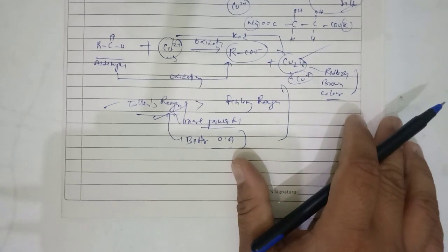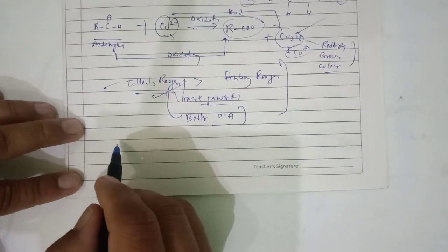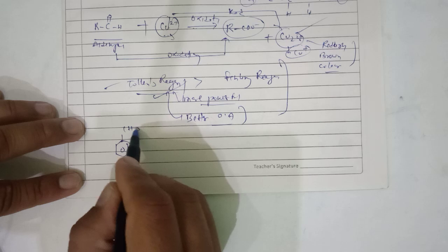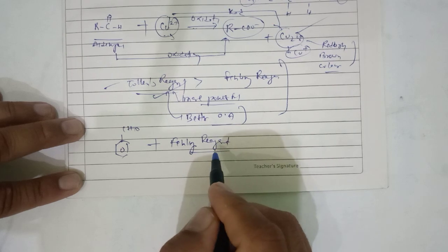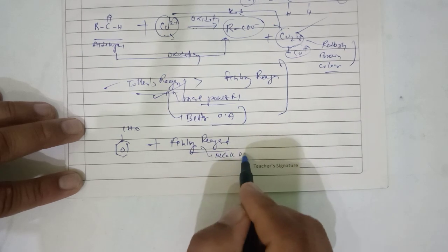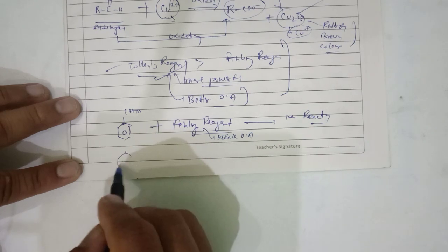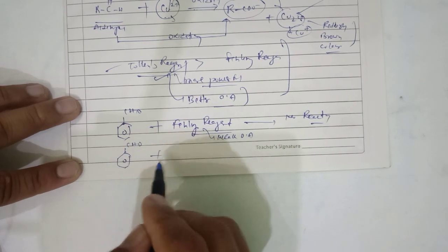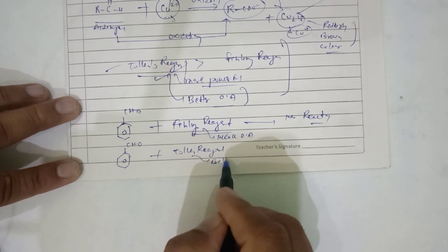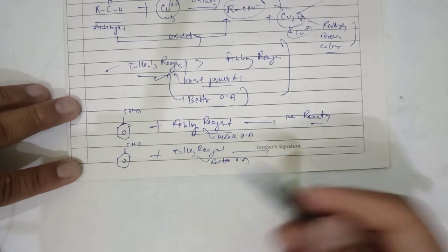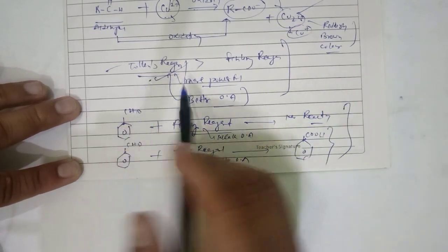Now let us look at an example. I am taking benzaldehyde, which is an aldehyde. With Fehling's reagent — which is a weak oxidizing agent — no reaction will take place. But if we take the same benzaldehyde with Tollens' reagent, which is a better oxidizing agent, oxidation will take place and carboxylic acid is formed. So we can compare: Tollens' reagent is a better oxidizing agent than Fehling's reagent.